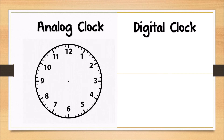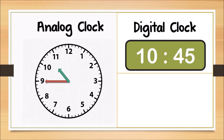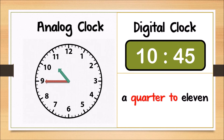Now, look at this analogue clock. The hour hand is pointing to a number between 10 and 11, while the minute hand is pointing to number 9. Can you tell me what's the time now? The digital clock shows 10 for the hour and 45 for the minute. We tell this time as a quarter to 11.